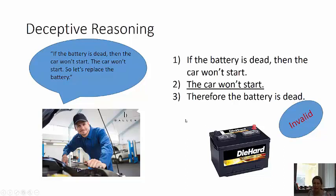This is using the affirming the consequent pattern again: if the battery is dead — if A, then B — it's affirming the consequent, B, therefore A. That is not the valid pattern. It's true that if the battery is dead the car won't start, but there are other reasons a car won't start. So you can't infer the battery is dead just from the fact that the car won't start.